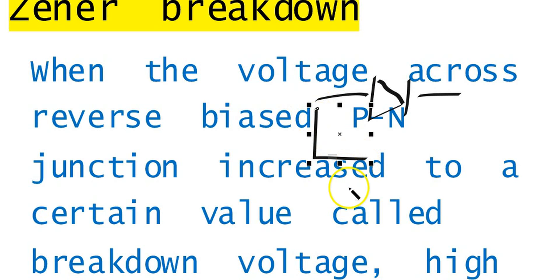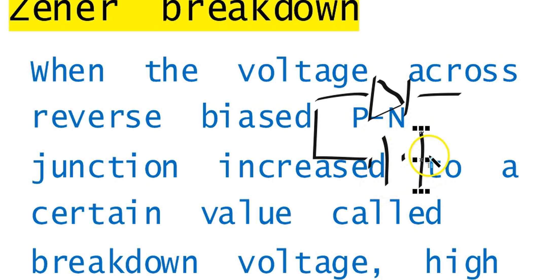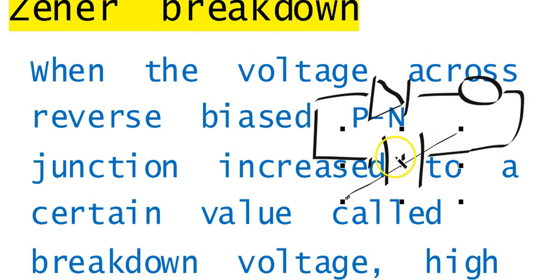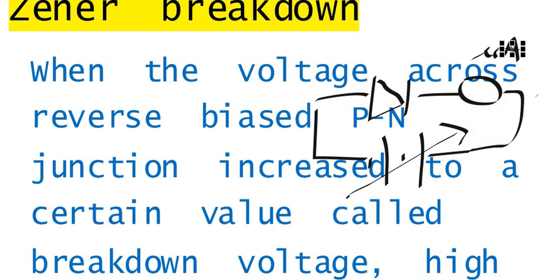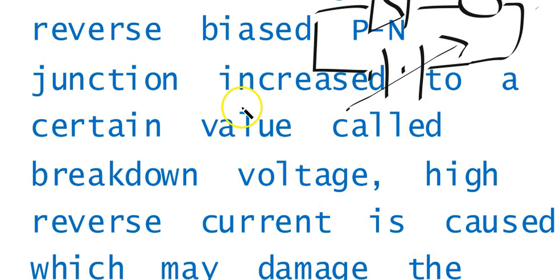we are making the PN junction reverse-biased, and there is a microammeter to measure the current. If the reverse bias voltage is variable and you note down the current, which is in microamperes, at a certain value of the voltage, suddenly the current rises — the current increases to a value corresponding to the breakdown voltage.